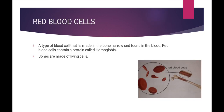The second type is red blood cells – yaani woh cells jo hamare khoon mein maujood hote hain. Red blood cells are a type of blood cell that is made in the bone marrow and found in the blood. Bone marrow ek fluid hota hai jo hamaari bones mein maujood hota hai. Red blood cells contain a protein called hemoglobin. Red blood cells mein hemoglobin paaya jaata hai, jo protein se banta hai.